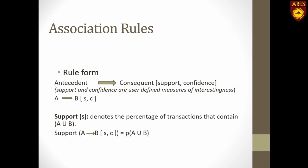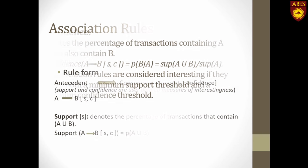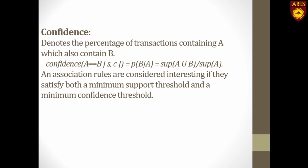Support basically defines the percentage of transactions that contain both items A and B. For example, the number of transactions that contain both bread and butter gives the support for that item pair. Confidence defines the percentage of transactions containing A which also contain B. It is calculated as the number of transactions containing both bread and butter divided by the number of transactions that contain bread, giving the confidence for the rule bread implies butter.